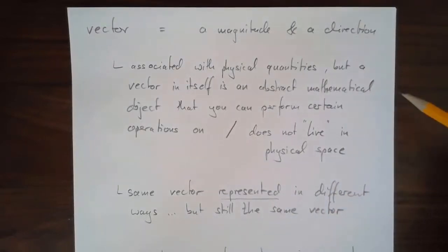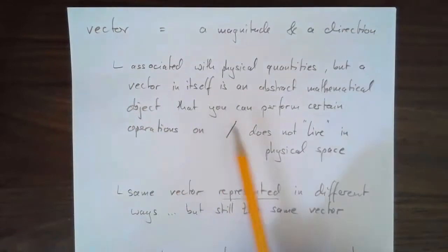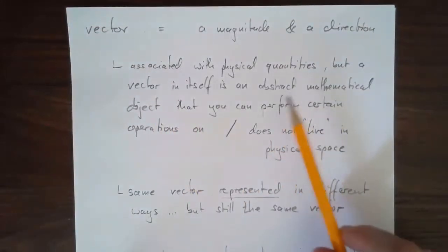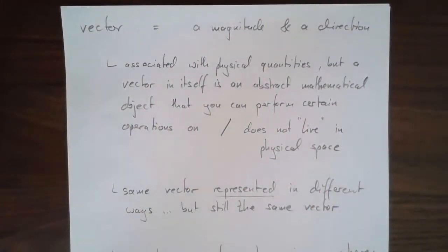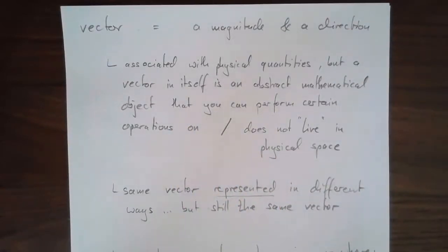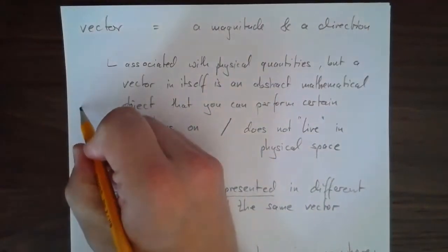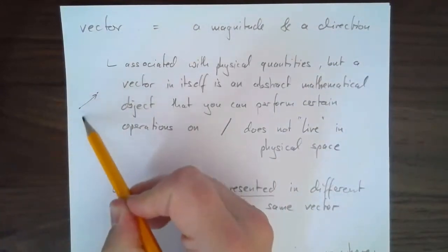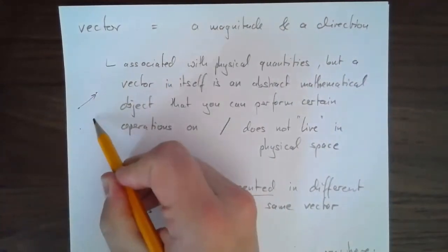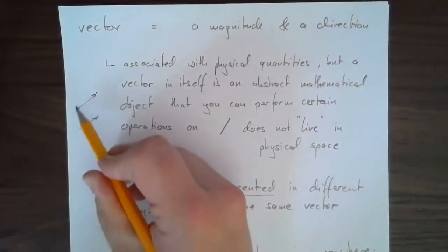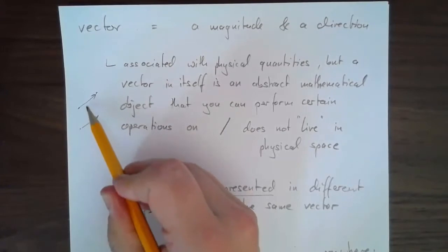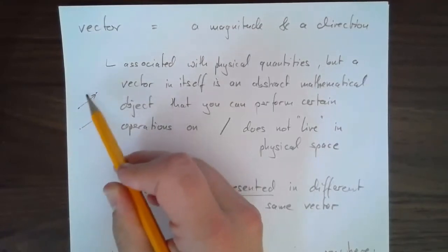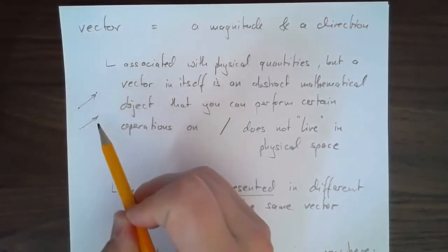But mathematically speaking, the vector is an abstract object. It is defined in terms of magnitude and direction but it lives in its own mathematical space called a vector space. You don't find a vector lying around on the ground. If I connect two points with an arrow, I've represented a certain vector, and if I draw the identical arrow down here, those two are not two different vectors — they're one and the same single vector.